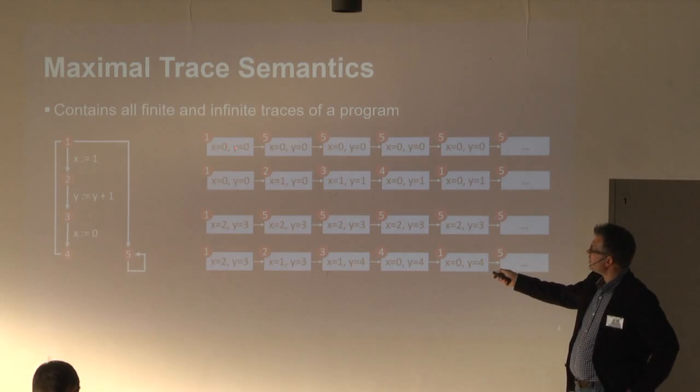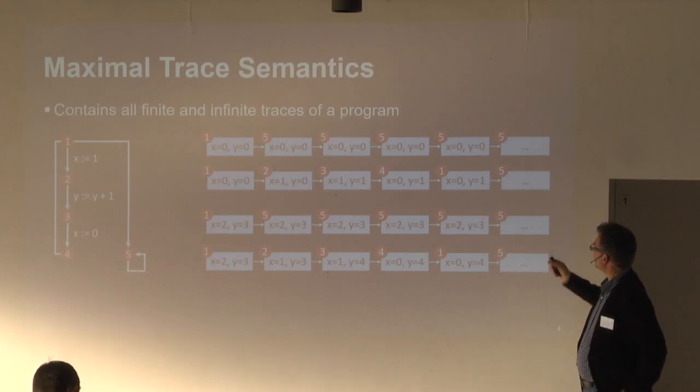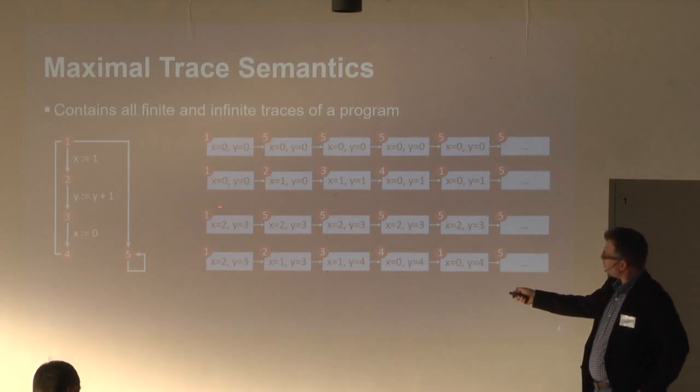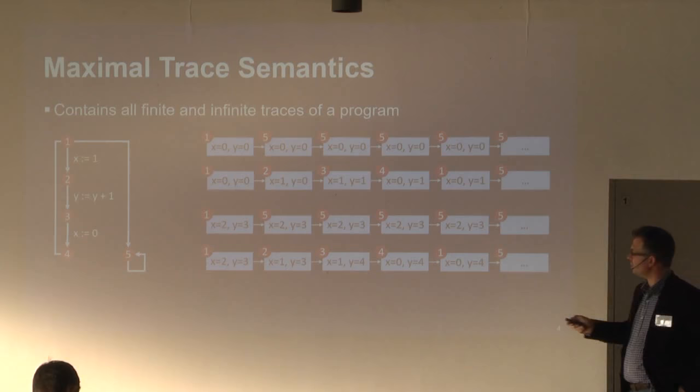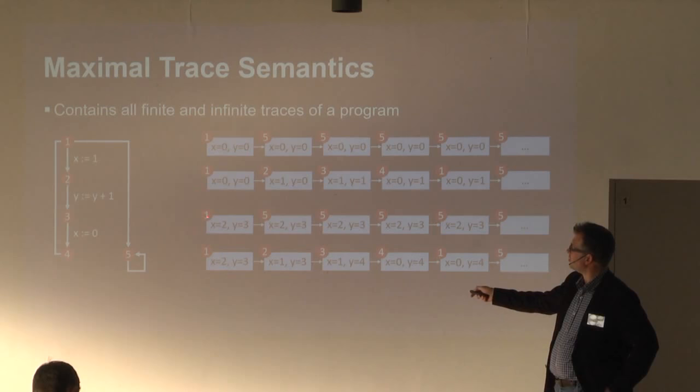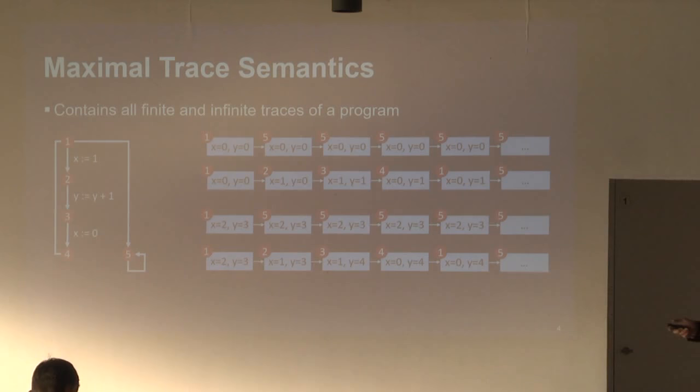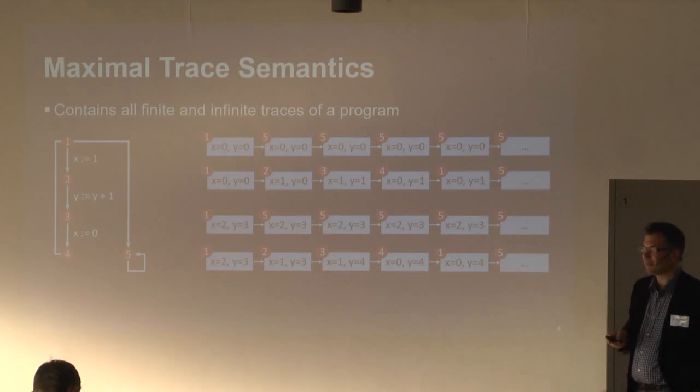For instance, the first trace starts in a state where x and y are both zero, iterates the first loop zero times, and then x and y are zero forever. The third trace shows the property does not hold for all executions: if x is initially two and y is three, and the first loop iterates zero times, we stay in that state forever and x will never be zero. That's one of the traces we would like to rule out with our precondition.